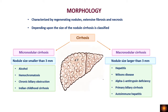Depending on the size of the nodule, cirrhosis is classified as micronodular or macronodular. The cutoff point is 3 mm — nodule size less than 3 mm is micronodular cirrhosis, and larger than 3 mm is macronodular cirrhosis. There is also a mixed type with both micro- and macronodules, seen in transition phases such as late-stage alcoholic liver disease.